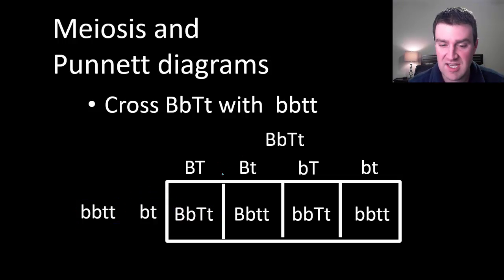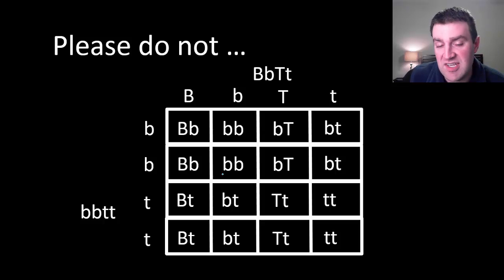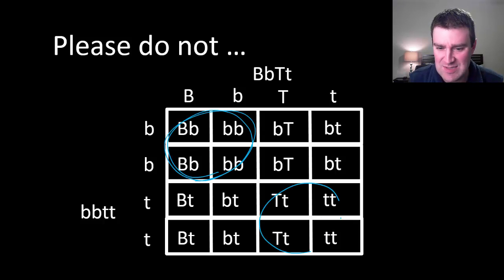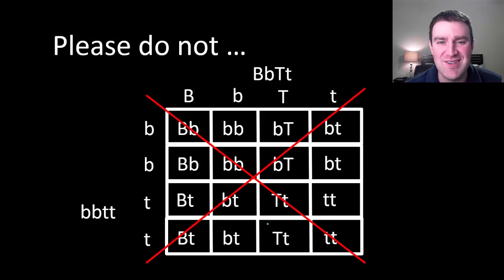So the most common mistake I see sometimes when students try to do these problems is they just think that you're just lining up letters on the top and the sides. And so they'll take their four letter parents and they'll do this. But I hope you very quickly see that this is just a disaster inside. We have B's but no T's for some of these offspring and we have T's but no B's for some of these offspring. That just isn't going to work. So please make sure you don't do this. You're not just loading letters on the top and the sides. You're really showing all of the different possible gametes.